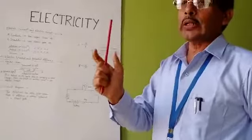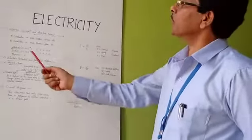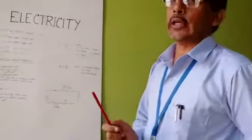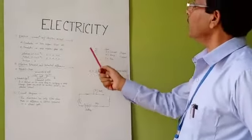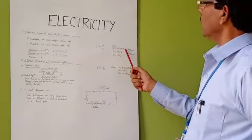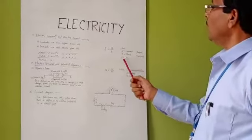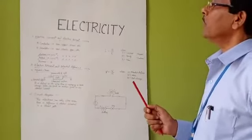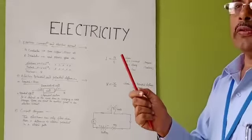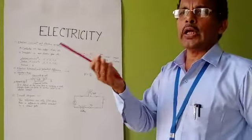Good conductors and bad conductors exist — bad conductors are also known as insulators. To find current, the formula is I = Q / T, where I is current in amperes, Q is charge in coulombs, and T is time.